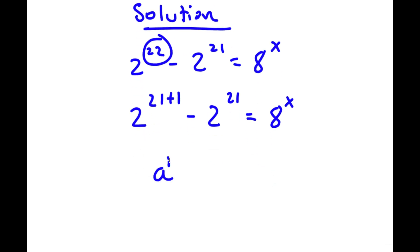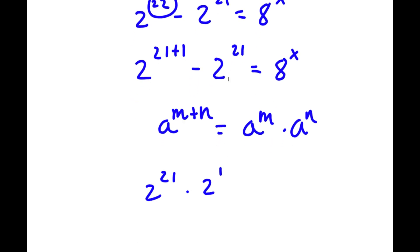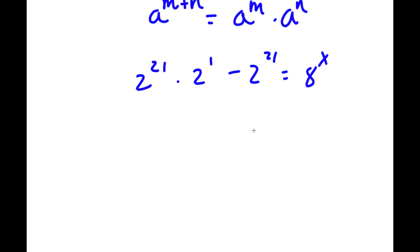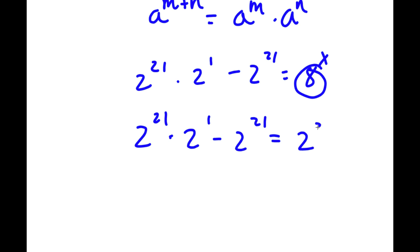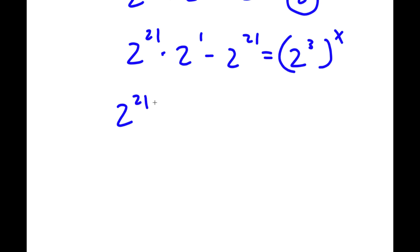If I have something in the form a to the power of m plus n, this equals a to the power of m times a to the power of n. So 2 to the power of 21 plus 1 becomes 2 to the power of 21 times 2 to the power of 1, minus 2 to the power of 21, equal to 8 to the power of x. Since 8 is the same as 2 to the power of 3, I have 2 to the power of 21 times 2 to the power of 1 minus 2 to the power of 21 equals 2 to the power of 3, to the power of x. Factoring out 2 to the power of 21 gives 2 to the power of 21 times (2 to the power of 1 minus 1), equal to 2 to the power of 3 to the power of x.